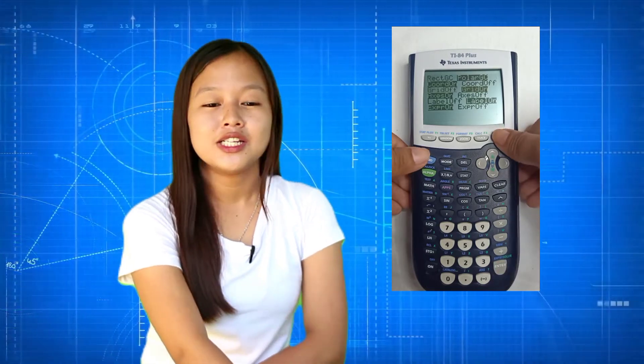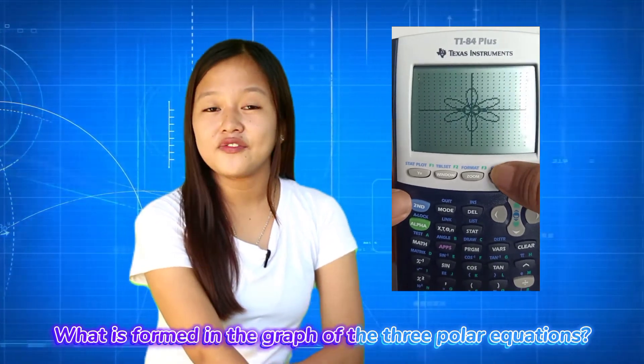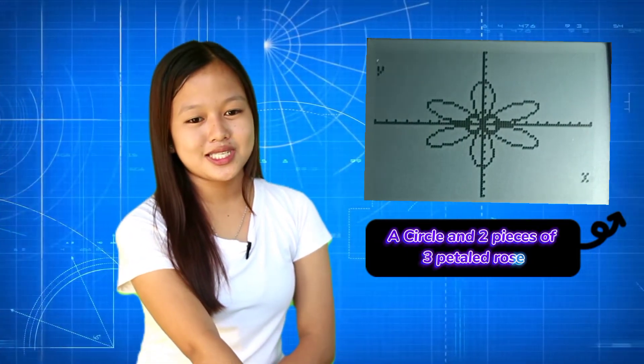To enjoy the features of this calculator, we can go back to the format and set the grid on to check on where did the equations lie. Let's go back to what is formed in the graph of the three polar equations. We have a circle and two pieces of three-petal rose. That is how we graph and solve problems using graphing calculators.